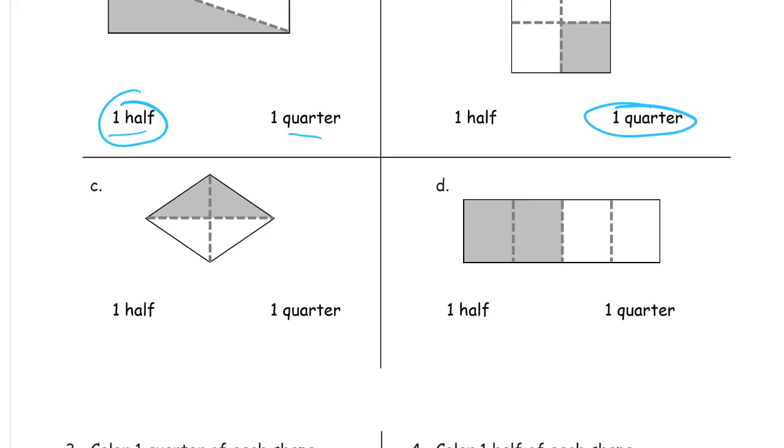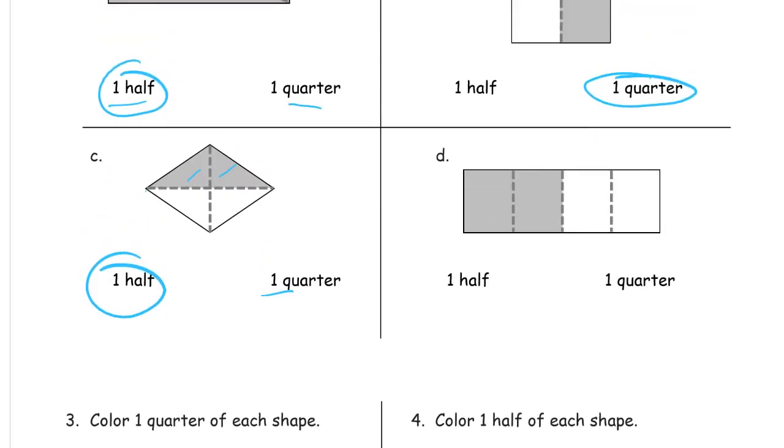And now here we have, this would be two quarters if it was quarters, but the choice here says one quarter. But if I look at it, this looks like it's half of the rhombus, so I'm going to circle one half. And then same thing here, this would have to be two quarters for me to count how many quarters are shaded in. But this looks like it's right down the middle, so it's half shaded in and half not, so it's halves, they're equal parts, those are halves.